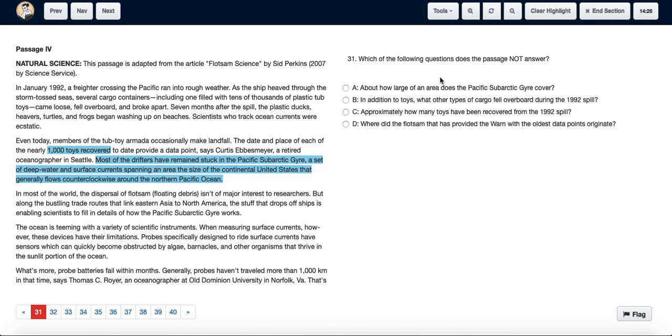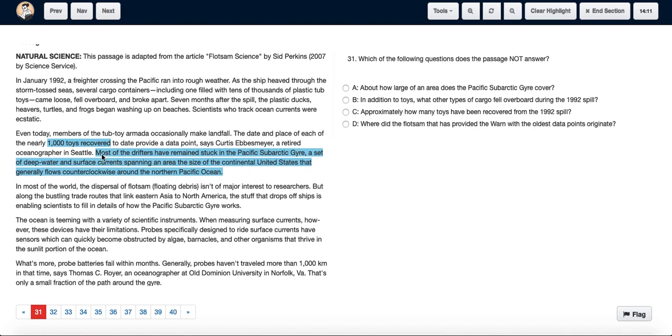The question asks us what question has not been answered by the passage, so let's look at the options. Option A asks about how large of an area does the Pacific sub-arctic gyro cover. We see in the second paragraph most of the drifters have remained